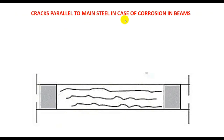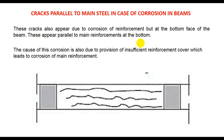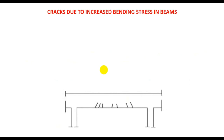Another type is cracks parallel to the main steel in case of corrosion in the beam. If corrosion occurs in the beam, cracks appear parallel to the main reinforcement at the bottom face of the beam. These cracks also appear due to corrosion of the reinforcement caused by provision of insufficient reinforcement cover, which leads to corrosion of the main reinforcement.